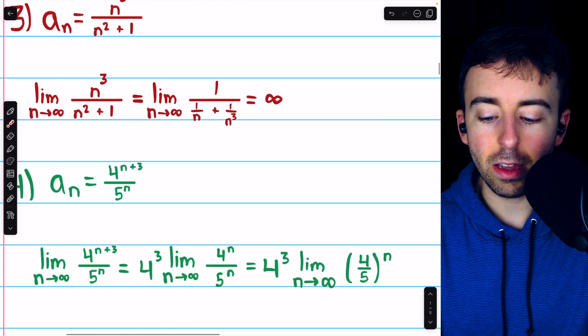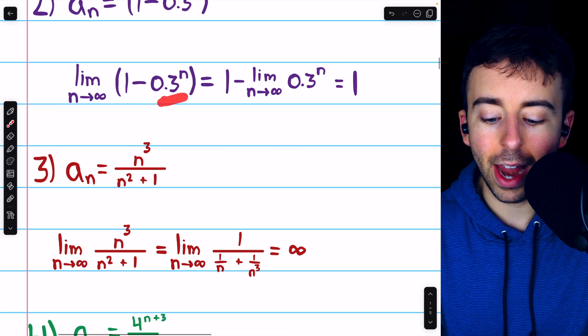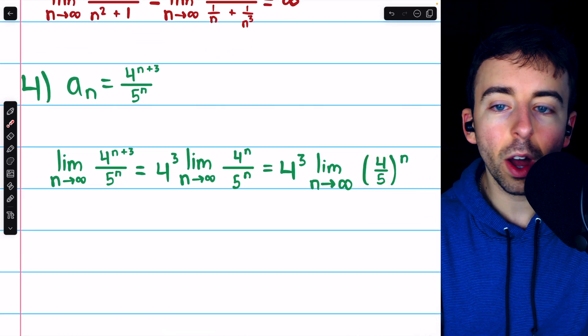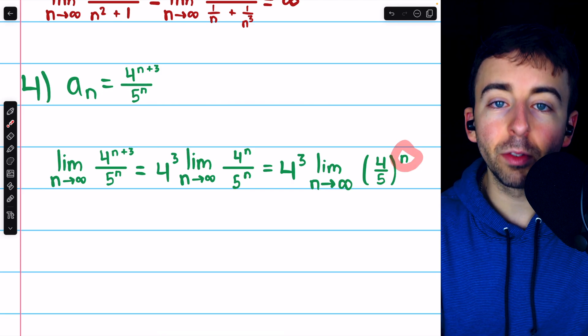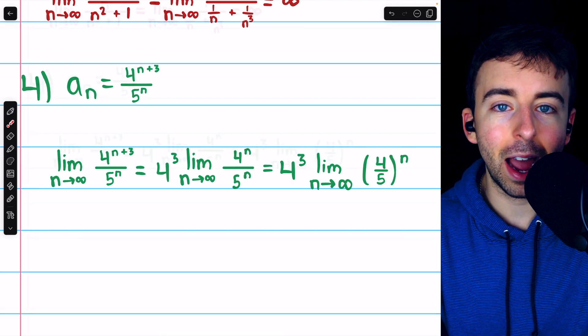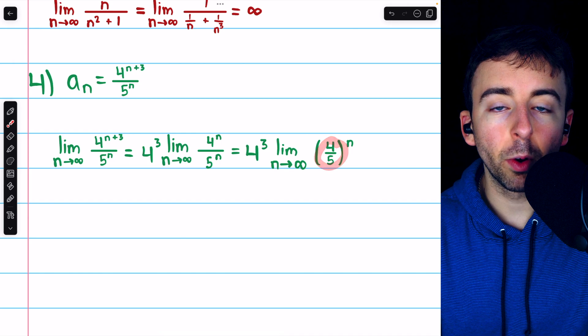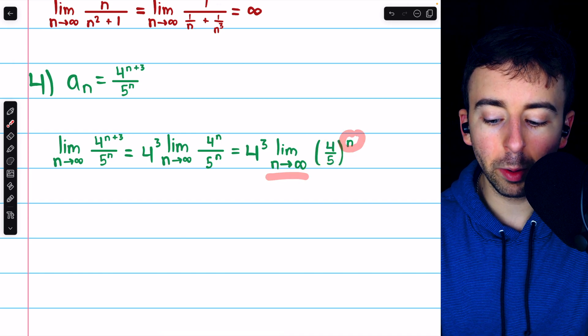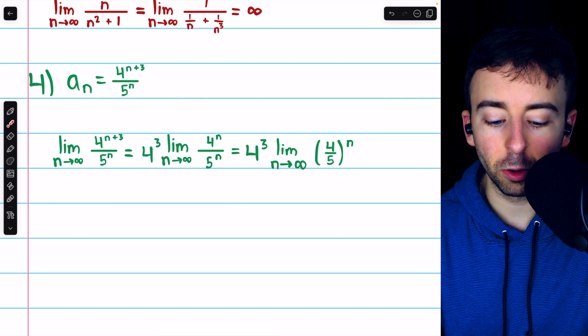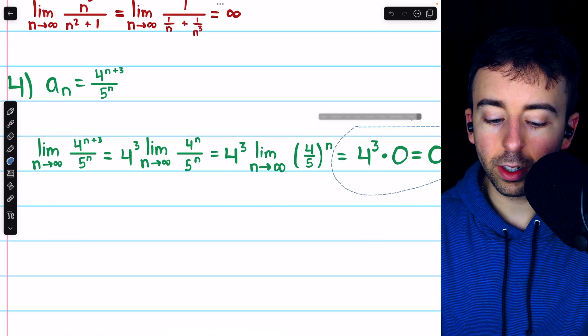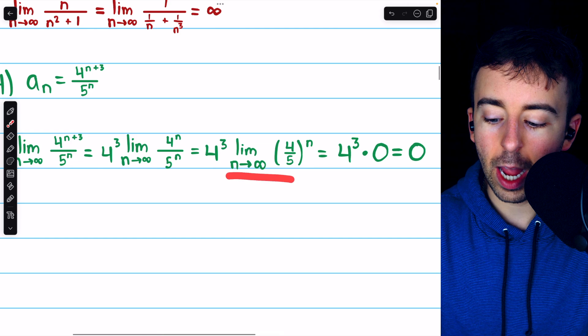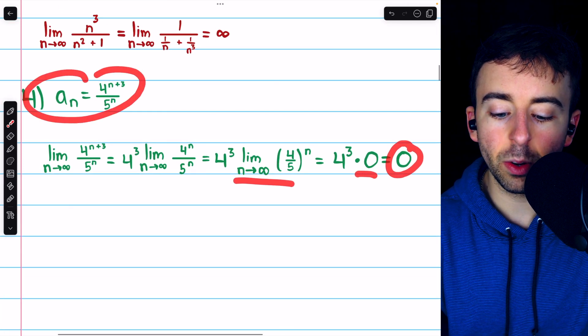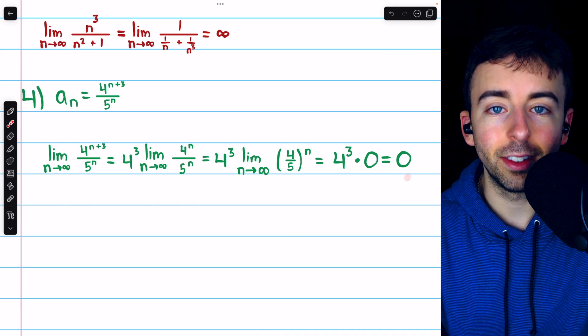Now, this is just like the 0.3 to the power of n that we were looking at. We have a number whose magnitude is less than 1 being raised to what we may informally call an infinite power. Every time you multiply by 4 fifths, the number gets smaller. So this is going to get arbitrarily small and go to 0. Thus, the limit is 4 to the power of 3 times 0, which is 0. So this is a convergent sequence. Its limit is 0.